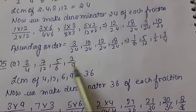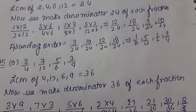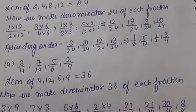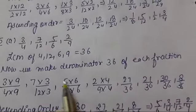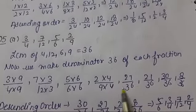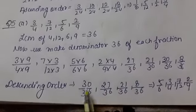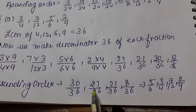7 upon 12, 5 upon 6, and 2 upon 9. Now firstly we take the LCM of 4, 12, 6, and 9, which is 36. Now we make the denominator 36. Then arrange in ascending order.